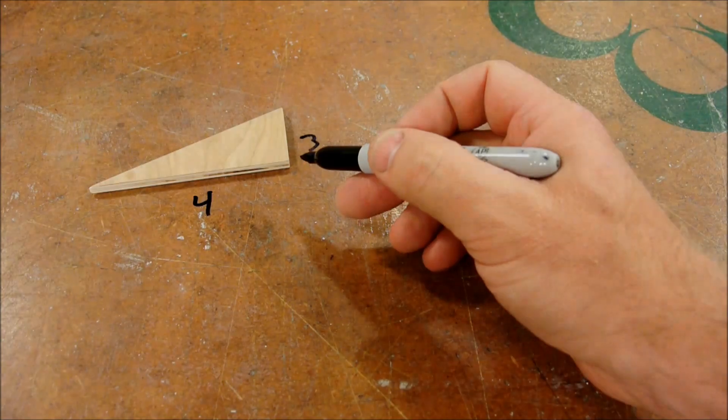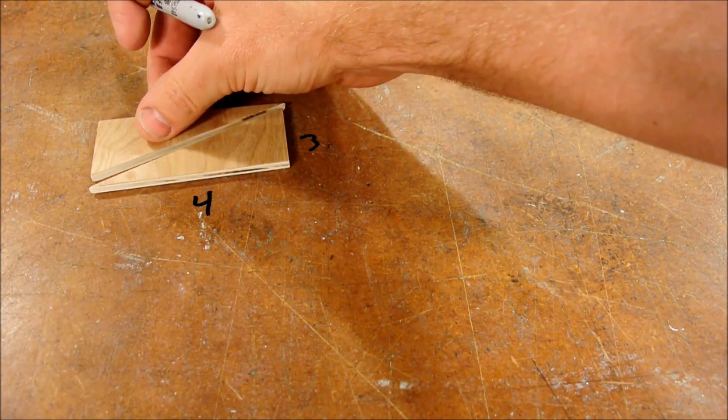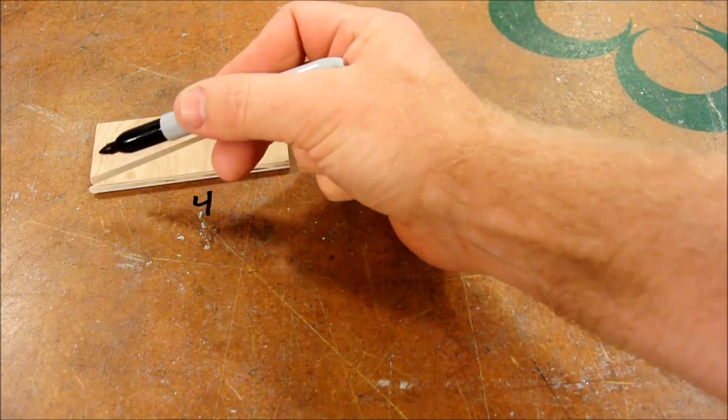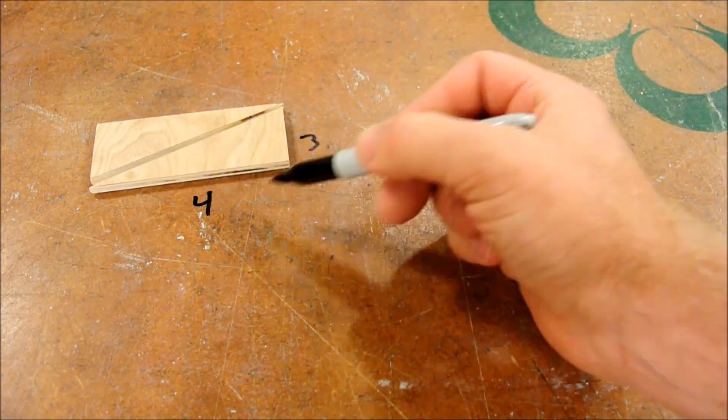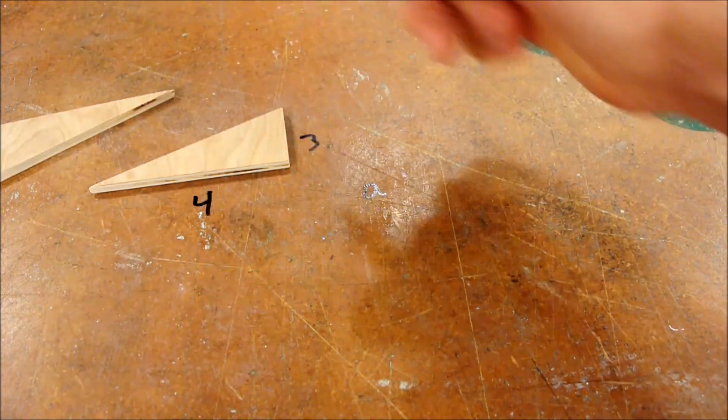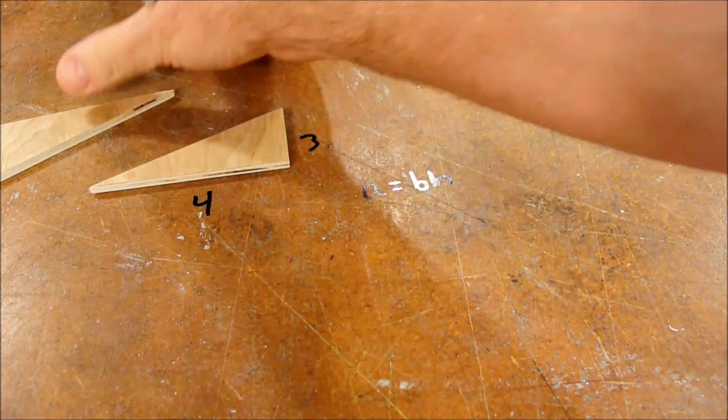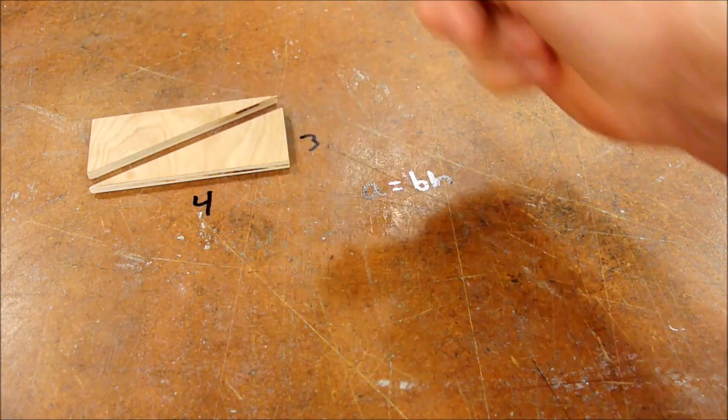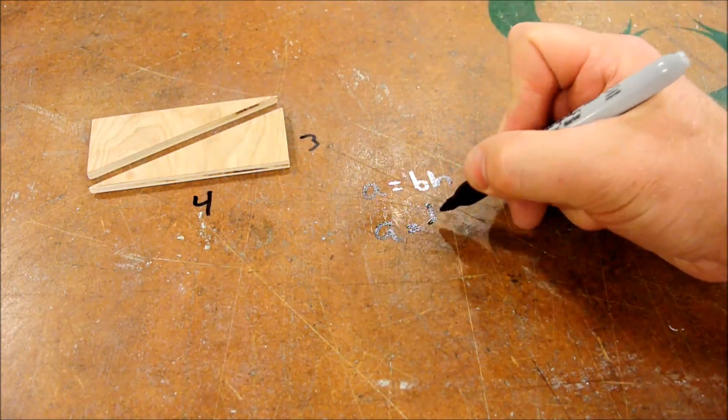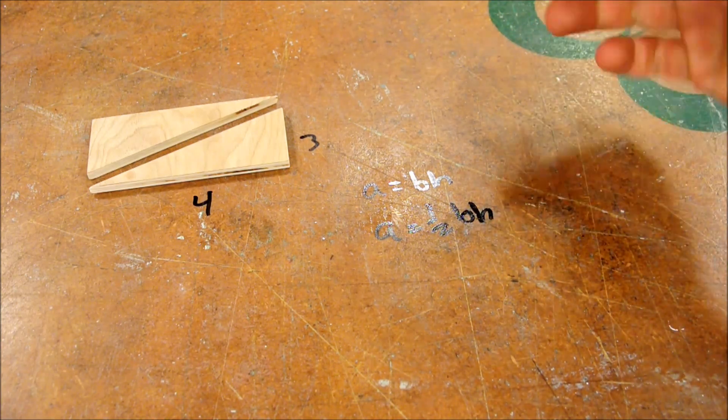Now, don't let this confuse you that 3 times 4 is 12, which would be the total area of a rectangle with side lengths 3 and 4. This is because the area of a rectangle is base times height, and the area of a triangle is one-half base times height, for obvious reasons.